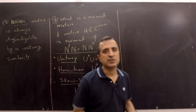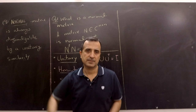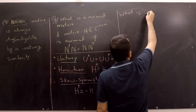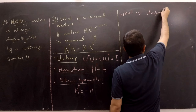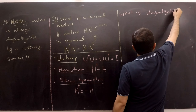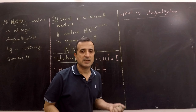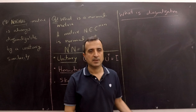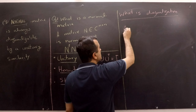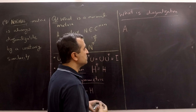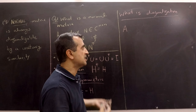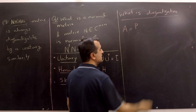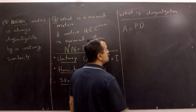Now the second important question: what is diagonalization? Diagonalization is basically decomposing a matrix into three special matrices. If we have a matrix A and it can be decomposed into three different matrices, then we say matrix A is diagonalizable. We can decompose this matrix into matrix P times matrix D times matrix P inverse.